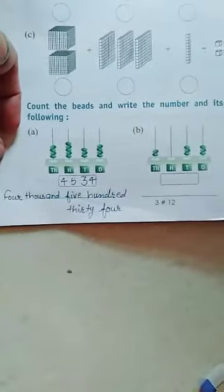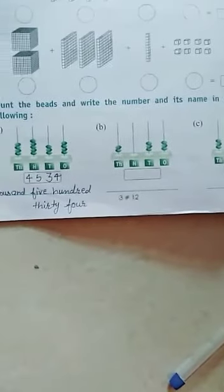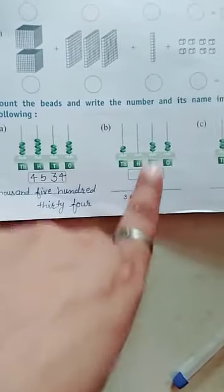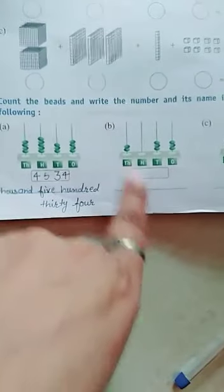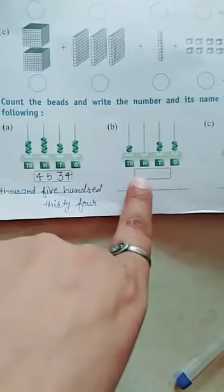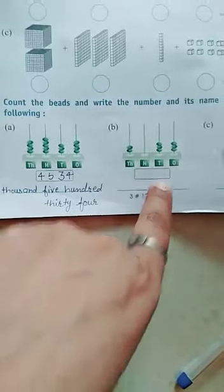So dear students, as it is, you have to do question number B. Just here there are 3, so you will write 3. Then 3 here, but here there are no beads, meaning 0. And then 2. So you get 3,032. As it is, you have question number C.